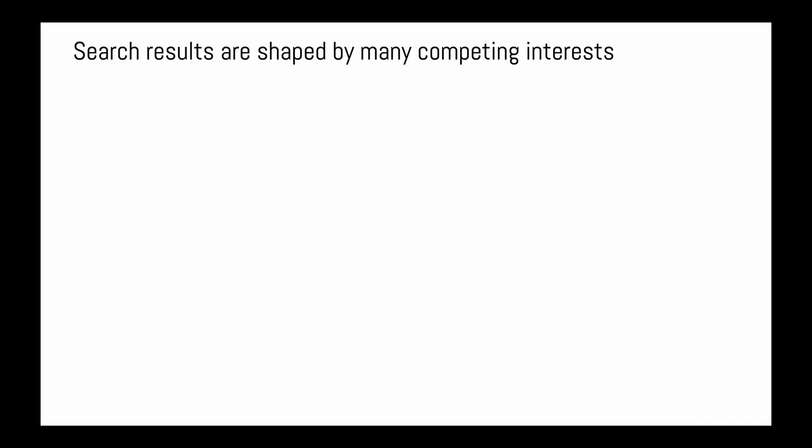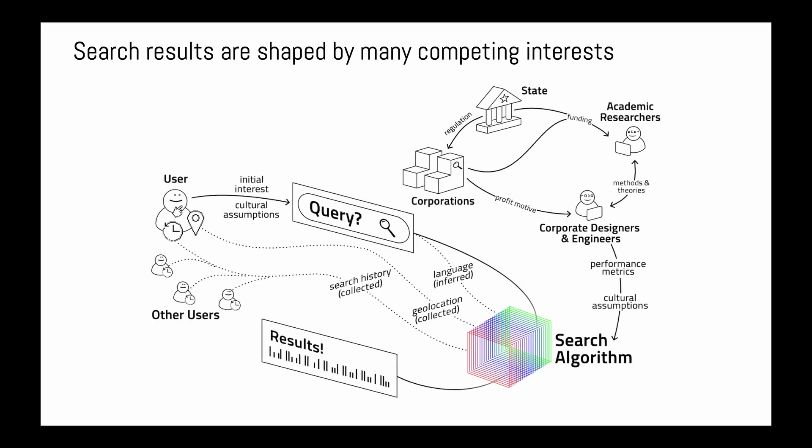Search results are products not only of the user's own interests, but also of complex struggles among the state, corporations, and academia. Search algorithms encode the cultural assumptions and performance metrics of the designers and engineers, which in turn are shaped by corporate profit motives, state regulations, and academic methods and theories.